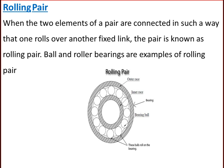The next type is a rolling pair. When two elements of a pair are connected such that one rolls over another fixed link, the pair is known as a rolling pair. Ball and roller bearings are examples of a rolling pair.